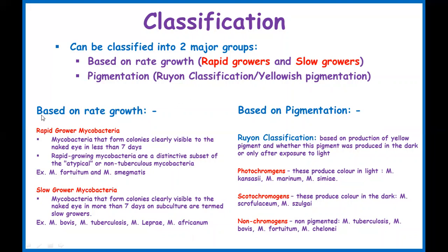Based on growth rate: rapid growers are Mycobacterium that are able to form colonies — visible to the naked eye — in less than seven days when cultured on an agar plate. These are the atypical type, also called non-tuberculous Mycobacterium. Examples include Mycobacterium fortuitum and Mycobacterium smegmatis, which is normally found even on glass.